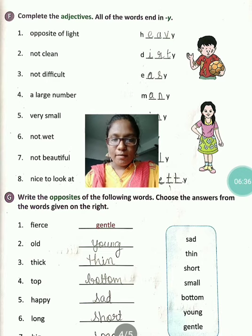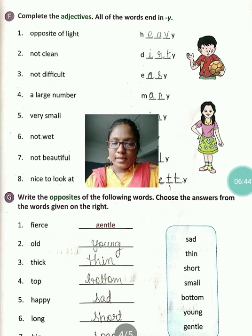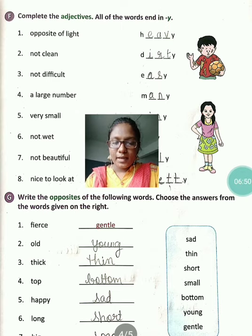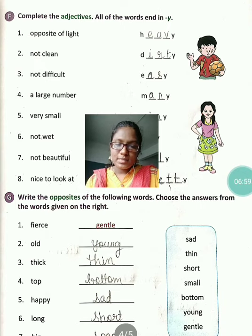You just have to fill in the opposites. First one: fierce — gentle. Second: old — young. Thick — thin. Top — bottom. Happy — sad. Long — short. Big — small.